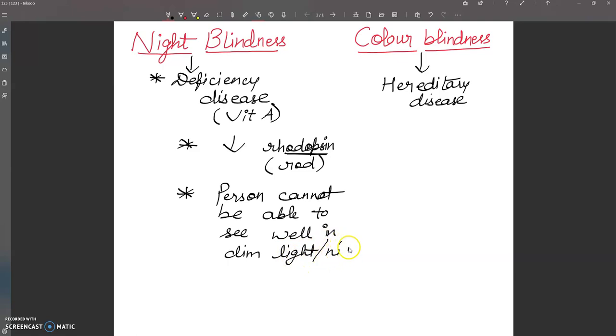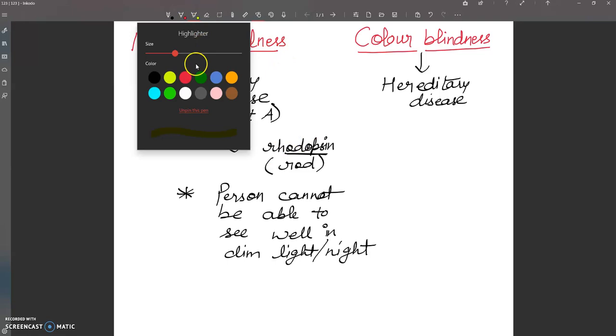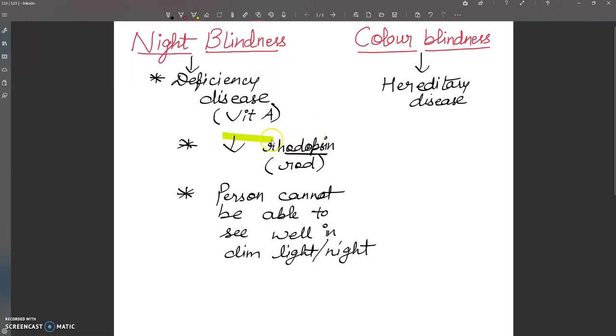Why can they not see? Because in the rod cells the rhodopsin content is very low, and this condition is what we call night blindness. So here the concentration of rhodopsin is reduced and it is a deficiency disease from vitamin A deficiency.